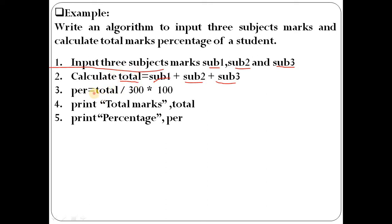The total marks are stored in a variable called 'total'. To find out the percentage, since there are three subjects and each subject's full marks is 100, the total full marks is 300. The formula to find the percentage is: total divided by 300, multiplied by 100. After calculating the percentage, print both values — total marks and percentage — using a print statement.